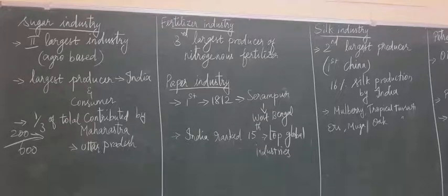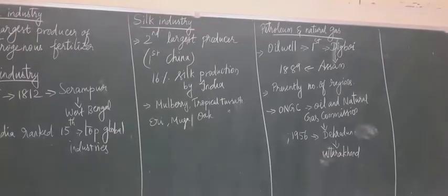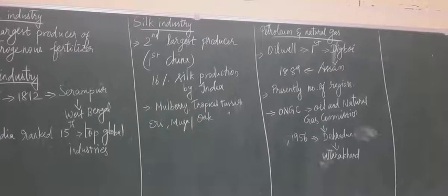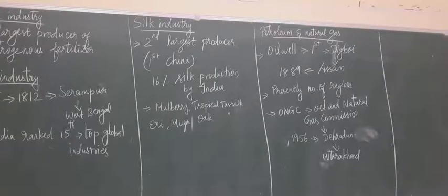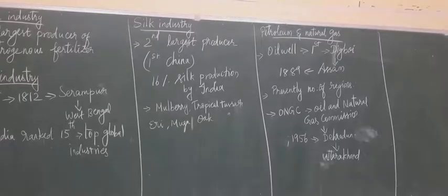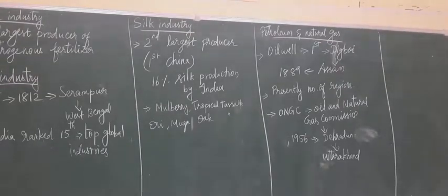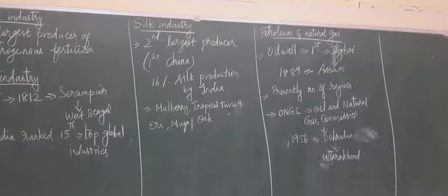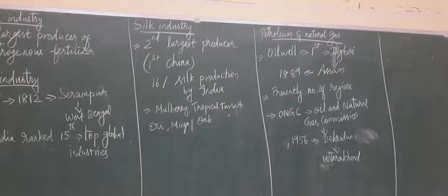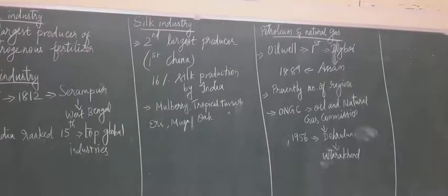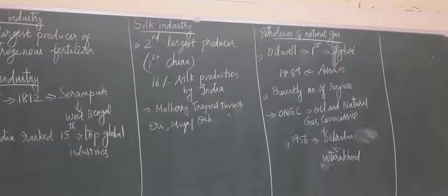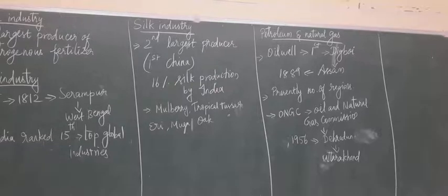The next one is the silk industry. India is the second largest producer of silk material. First place goes to China and India is the second largest producer of natural silk. We obtain silk from the silkworm — cocoons and other things. At the global level, India is contributing 16% of the total production of silk.